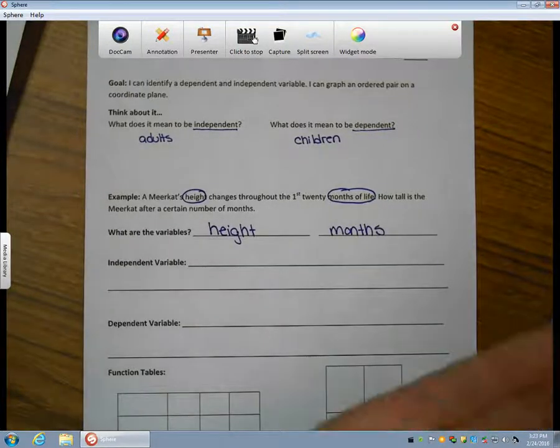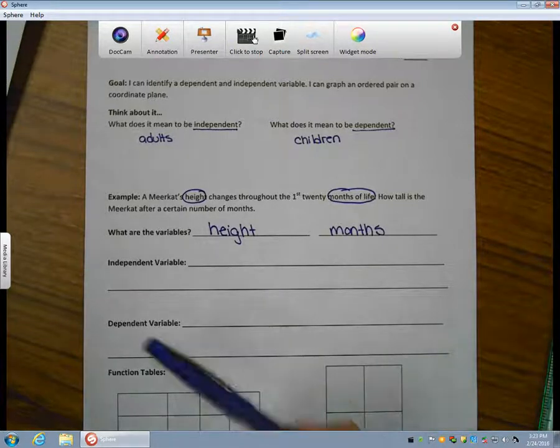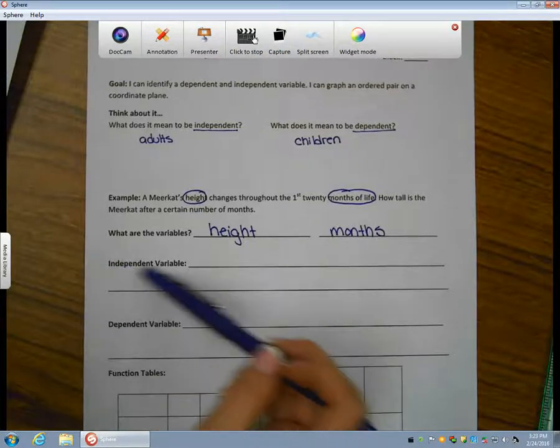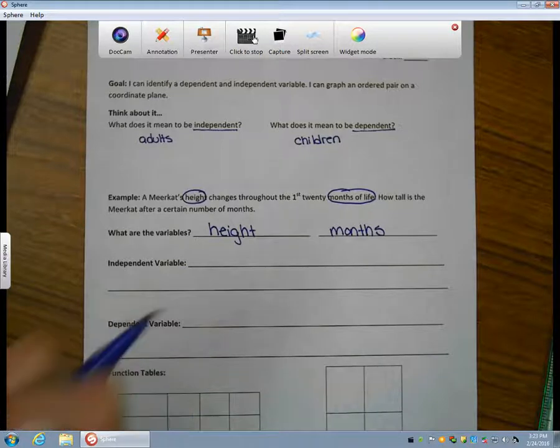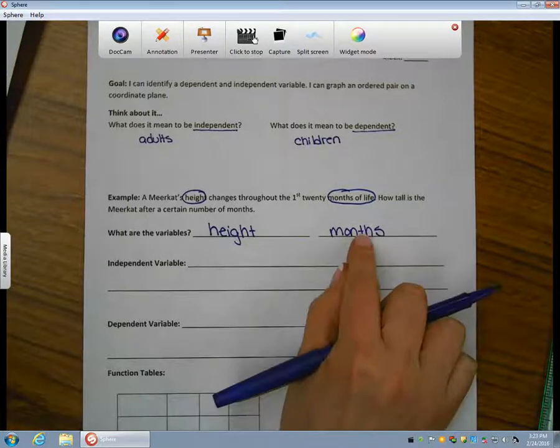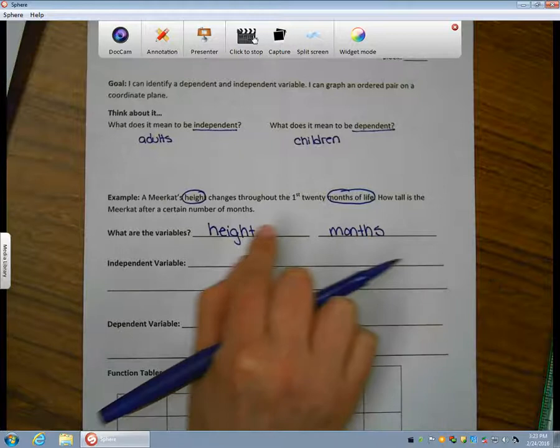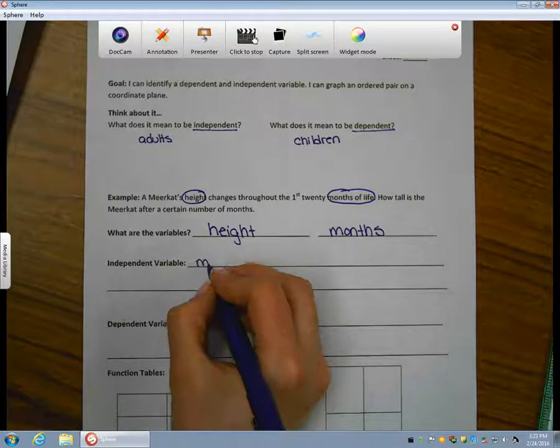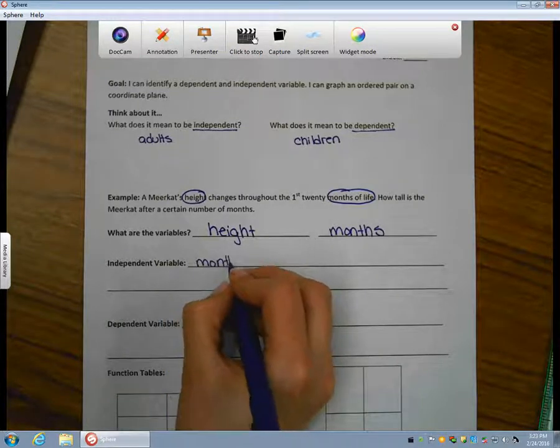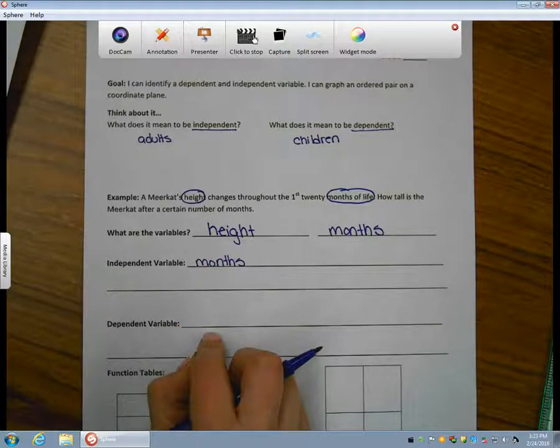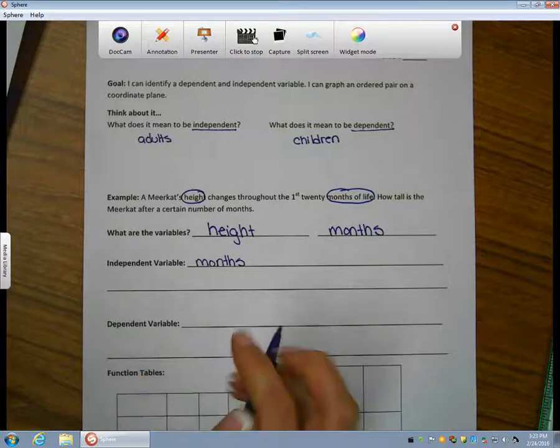So which is an independent variable and which is dependent? The dependent variable depends on the independent variable. The independent variable changes on its own. Another way to think about this is to think what must occur for the other to occur. Well, I know that months must pass in order for the meerkat to grow or change height. So the independent variable will be the months. As the months change, the height changes and increases. So I know that the dependent variable will be the meerkat's height.